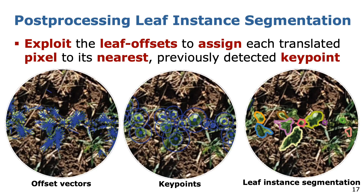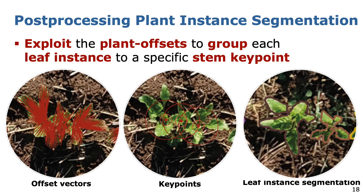Next, we perform the instance segmentation of crop leaves by assigning each pixel translated by its offset vector, shown on the left-hand side, to a specific keypoint shown in the center figure. We define the set of pixels assigned to a specific keypoint as the mask of this instance shown on the right-hand side. However, we discard pixels which have a distance larger than the defined rejection radius, illustrated by blue circles around each keypoint in the center figure. Finally, we employ the second set of predicted offsets to group each previously detected leaf instance to a specific stem keypoint by a similar procedure. Thus, we define the instance segmentation of a plant as the union of its associated leaves.